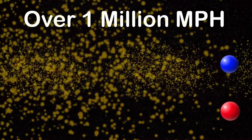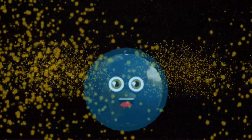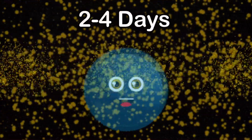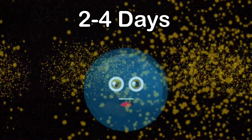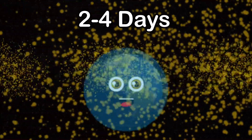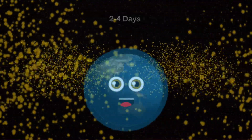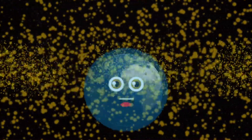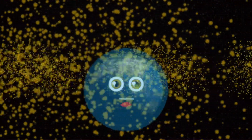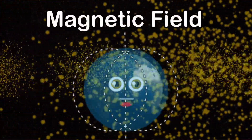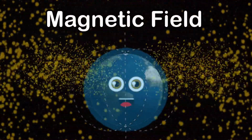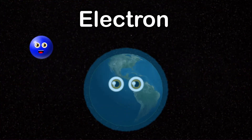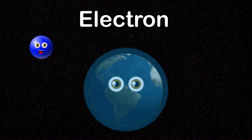It can take two to four days for these particles to reach the earth's atmosphere. When these particles reach earth, they're pushed by earth's magnetic fields to the north and south poles, protecting you like a shield.